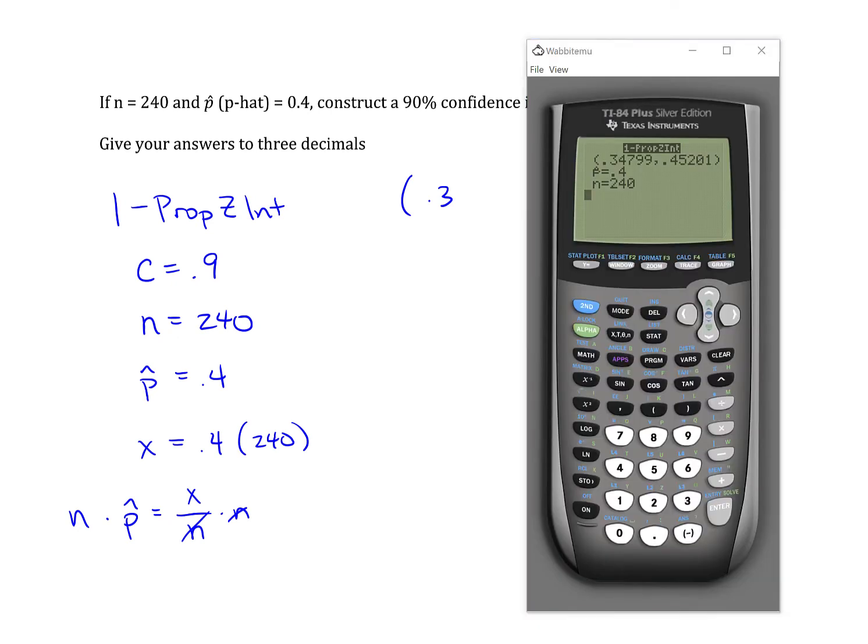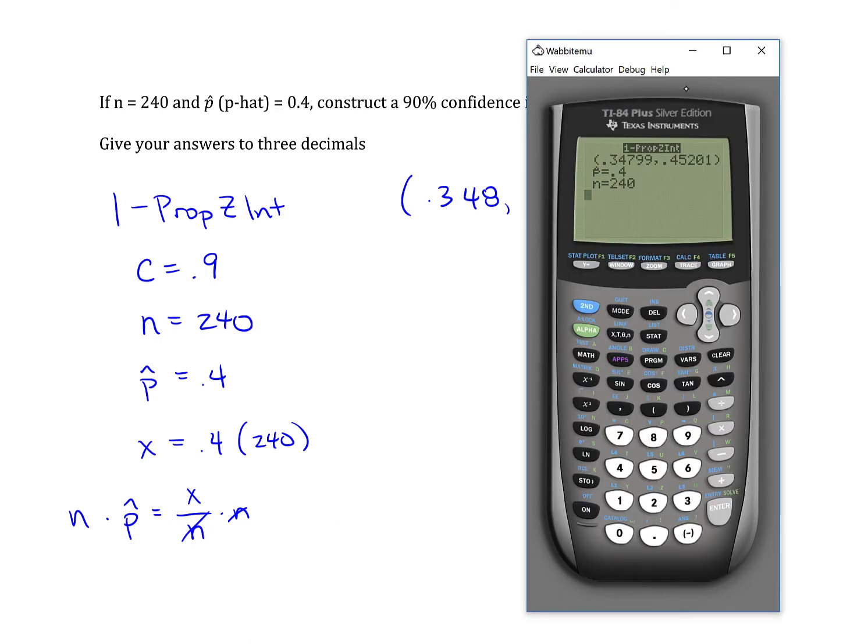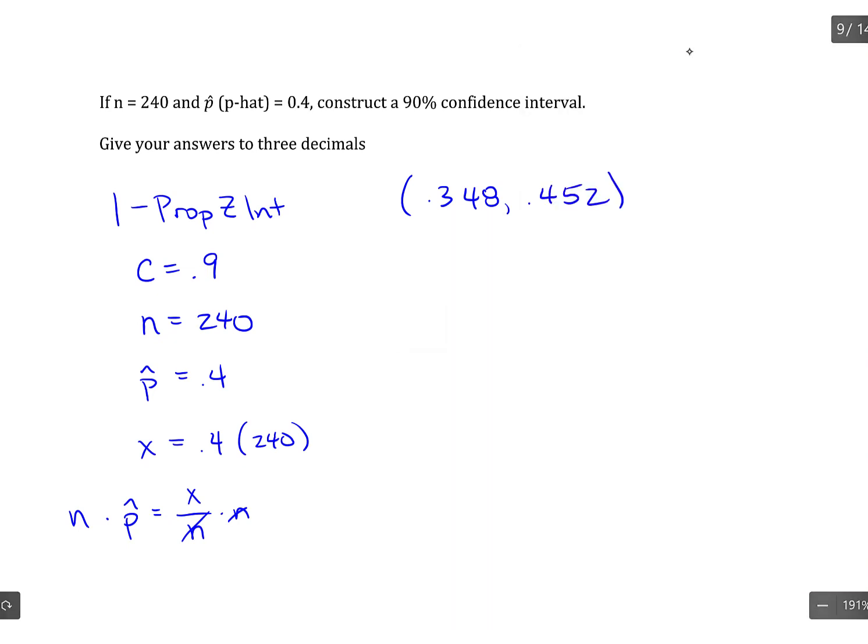So we have 0.348 and 0.452, it looks like. All right, so that is the endpoints of your confidence interval.